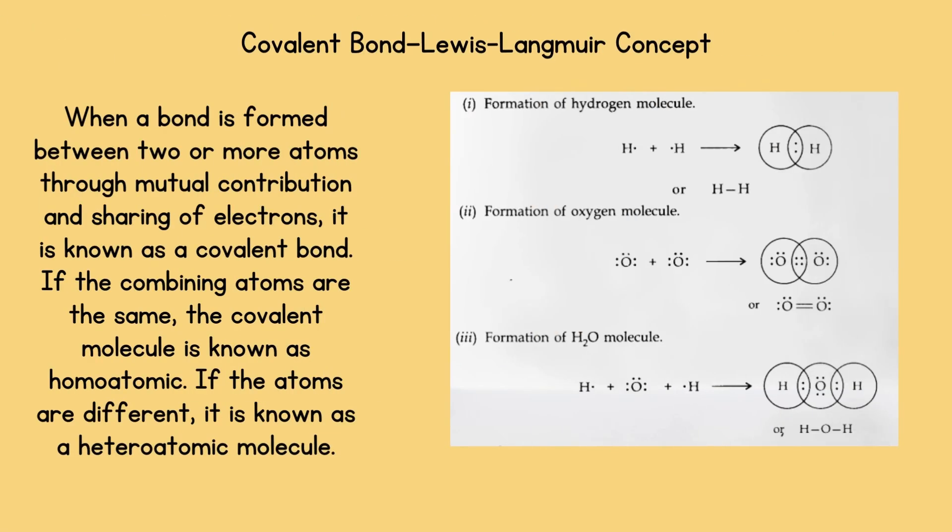Covalent bond. Lewis Langmuir concept. When a bond is formed between two or more atoms through mutual contribution and sharing of electrons, it is known as a covalent bond. If the combining atoms are the same, the covalent molecule is known as homoatomic. If the atoms are different, it is known as a heteroatomic molecule. For example, in the image, both hydrogen atoms are same as they have one electron. Similarly, with oxygen and water.